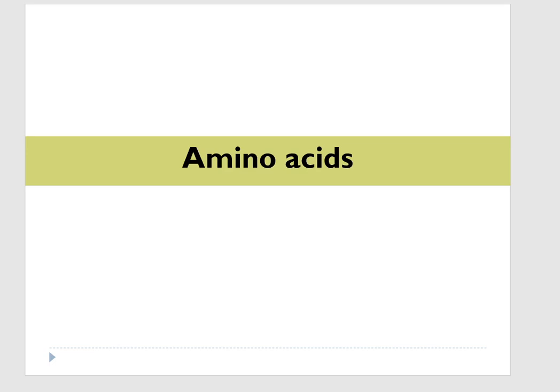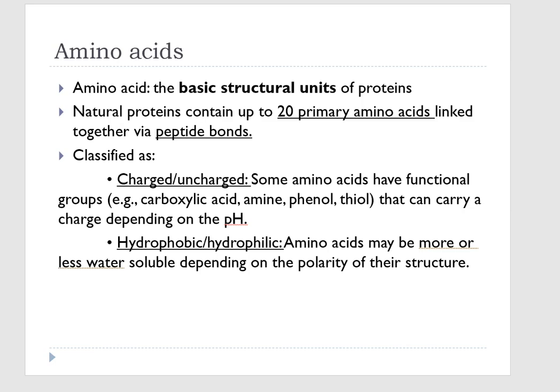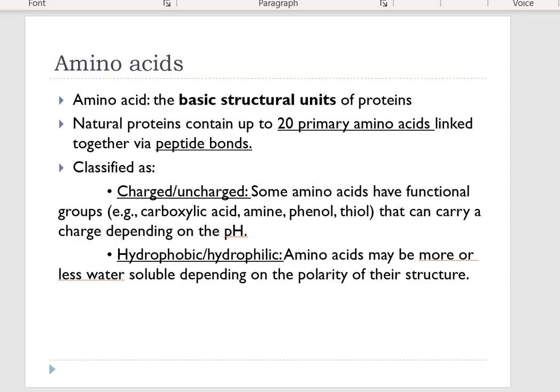Amino acids are the building blocks that proteins are made of. Natural proteins contain up to 20 primary amino acids, linked together via peptide bonds. These 20 amino acids all have distinct structures and unique properties. With a couple of important exceptions, we can classify them as charged or uncharged — some amino acids have functional groups that can carry a charge depending on the pH of the environment.